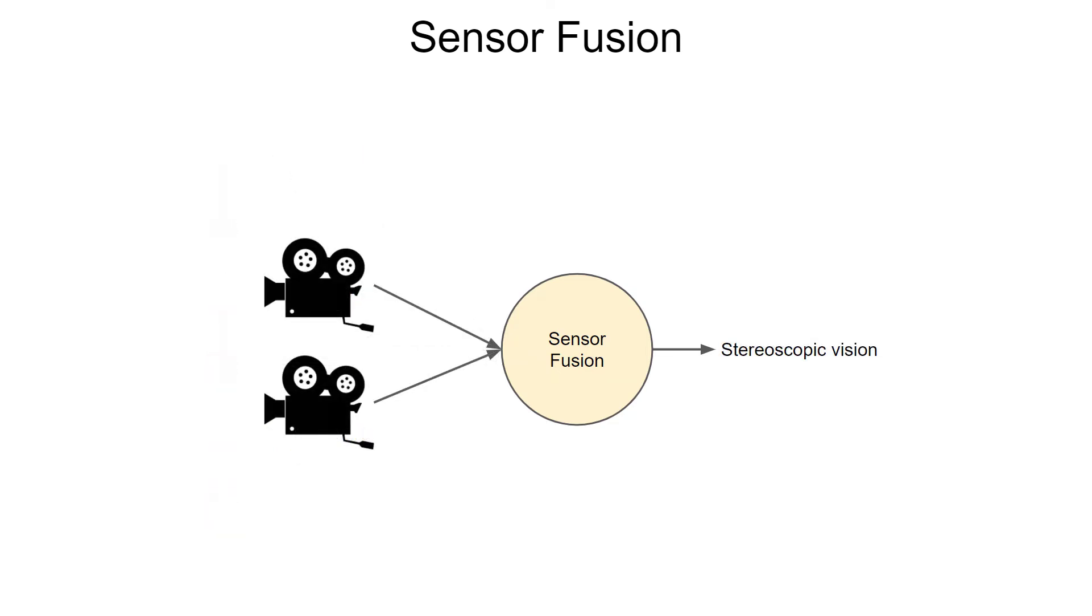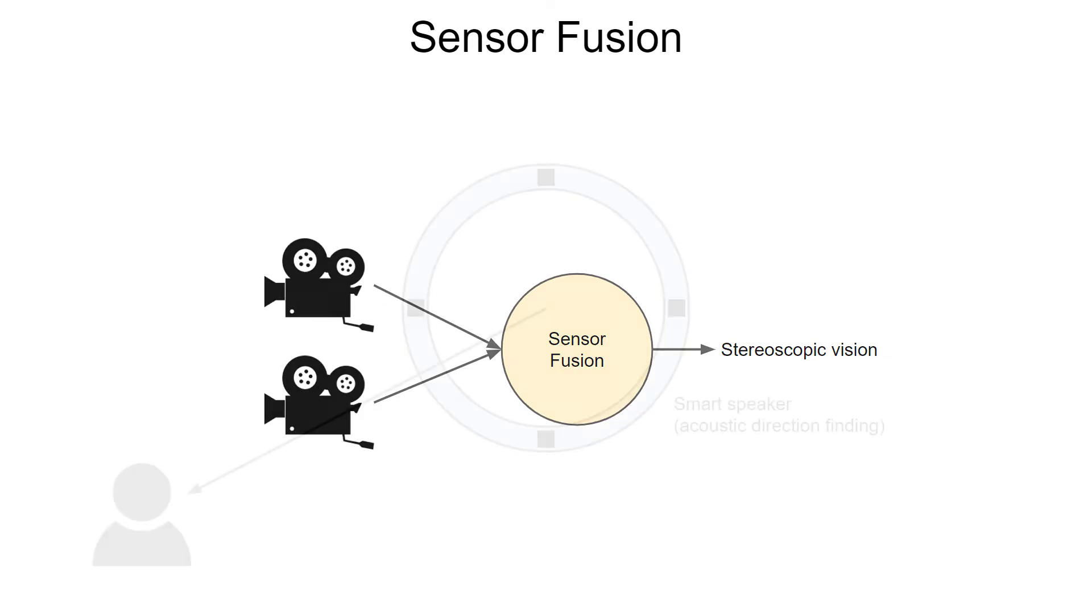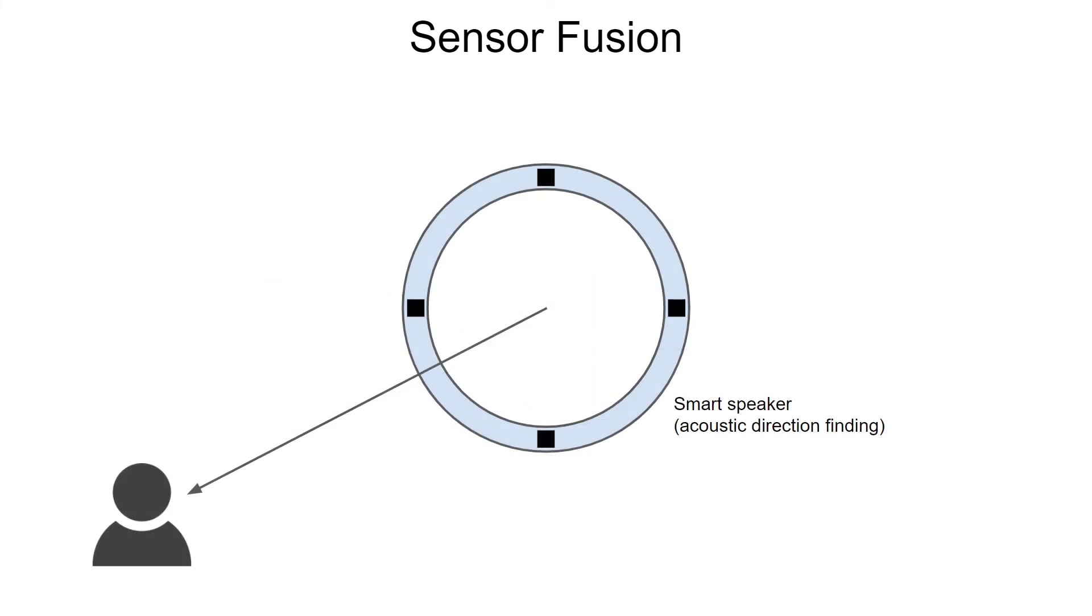Another example of using more than one of the same sensor is stereoscopic vision. With two cameras you can combine the images to get some basic depth perception. This same idea holds for audio as well. The Echo uses this concept - it uses a ring of four to eight microphones to help cancel noise and track the speaker in the room.